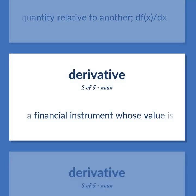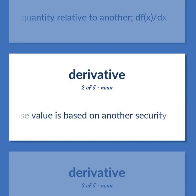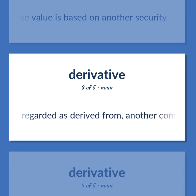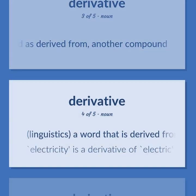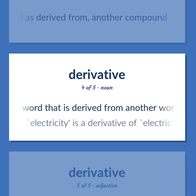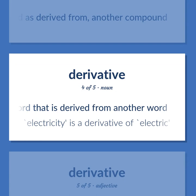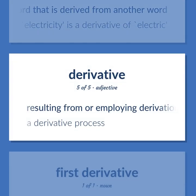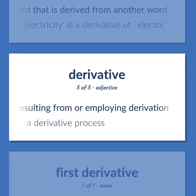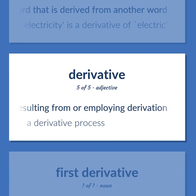Derivative — a financial instrument whose value is based on another security. A compound obtained from, or regarded as derived from, another compound. In linguistics: a word that is derived from another word. Example: 'Electricity' is a derivative of 'electric.' Also: resulting from or employing derivation.